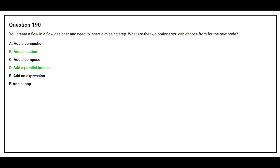The correct answers are Option B: Add an action, and Option D: Add a parallel branch.